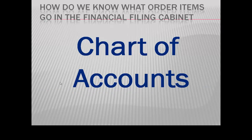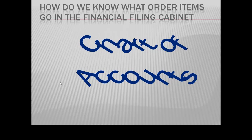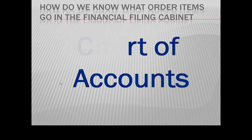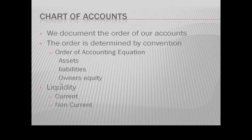How do we know the order of items in the filing cabinet? This is determined by our chart of accounts. Items go in the order of the accounting equation: assets come first, then liabilities, then owner's equity. So the top drawer is assets, the second drawer is liabilities, and the third drawer is owner's equity.